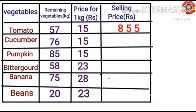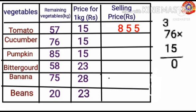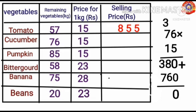Next, find the selling price of cucumber. To find out this, multiply 76 and 15. 76 into 15: 5 into 6 is 30 — write 0 here and 3 is the carryover. 5 into 7 is 35, plus 3 is 38. 1 into 6 is 6, 1 into 7 is 7. Adding together: 0 plus 0 is 0; 8 plus 6 is 14 — write 4 here and 1 is the carryover; 3 plus 7 is 10, plus 1 is 11. Selling price of cucumber equals Rs. 1140.